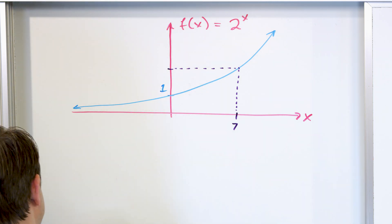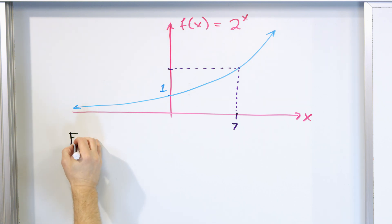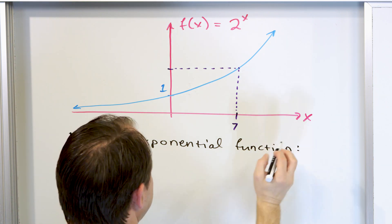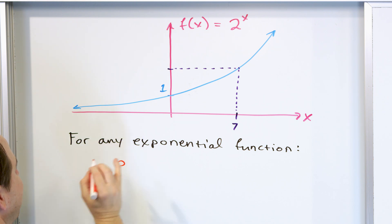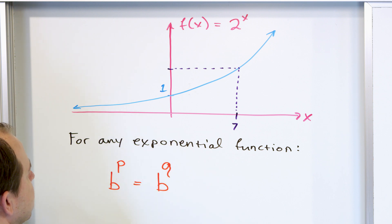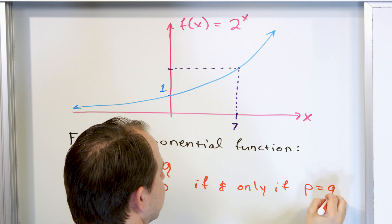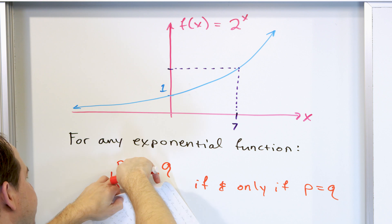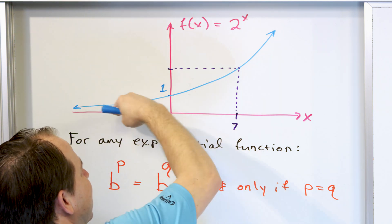Because of the shape of the exponential function — even if it goes the other direction, starting high and coming low — it's still a one-to-one function. So for any exponential function with the same base, if B to the power of P equals B to the power of Q, then P equals Q if and only if the bases are the same. This is true because it's a one-to-one function.